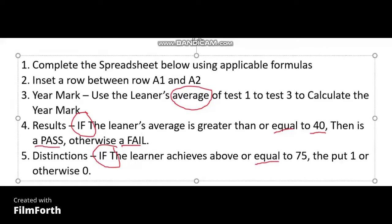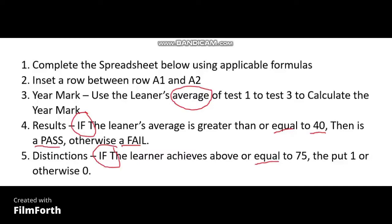You should be able to convert words into statistical formulas. For example, if they use the word 'equal sign,' you must put the equal sign. If they use the word 'greater,' you must use the greater-than sign. They say if the learner's average is greater than or equal to 40, so that means there must be a 40 also — highlight it because it's going to be part of the formula.